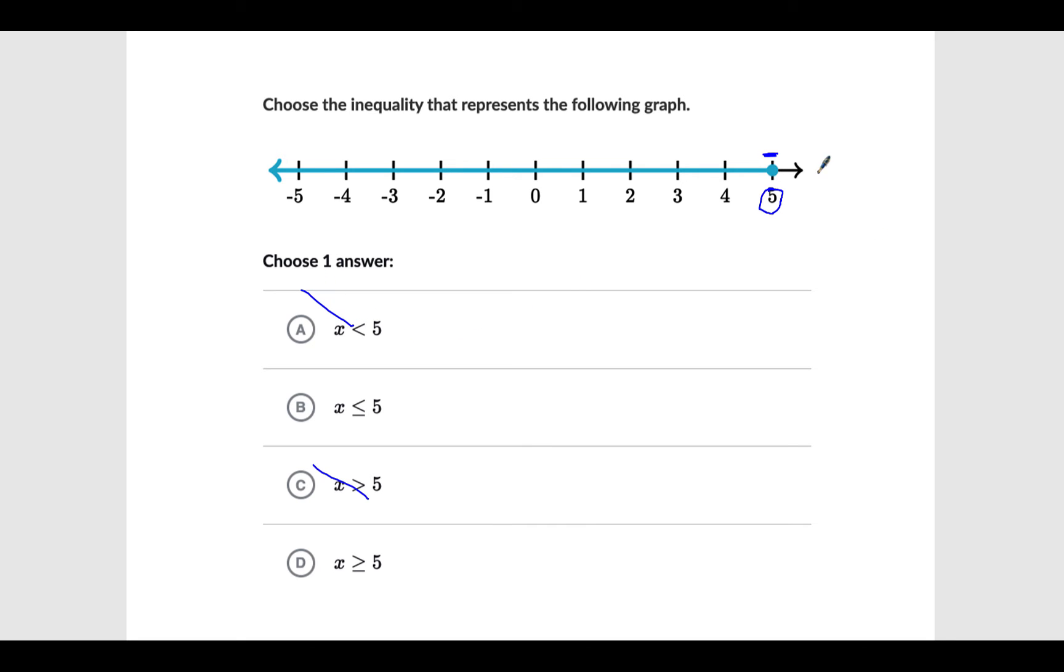And so that immediately means C is wrong, and A is wrong. Now, if you look at where it is pointing, it is pointing to the left. So our answer will be B. Okay? So let's move on.